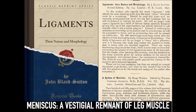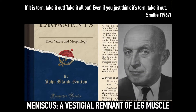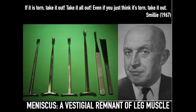What Sutton considered was that the meniscus was a vestigial remnant of a leg muscle. This was the foundation behind thinking about the meniscus at that time. Smiley in 1967 said about the meniscus: 'If it is torn, take it out — take it all out. Even if you just think it's torn, take it out.' So surgeons used to be very aggressive towards the meniscus, considering it a vestigial, problematic structure that should be excised rather than repaired or preserved.